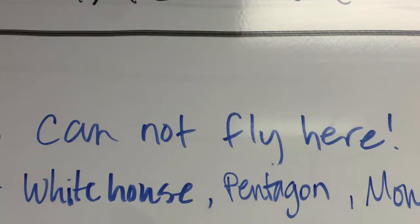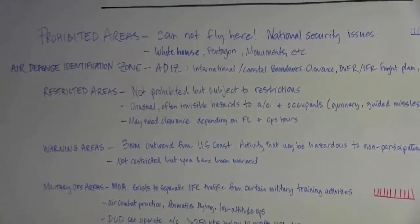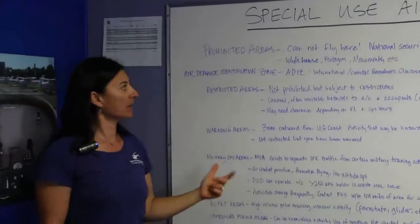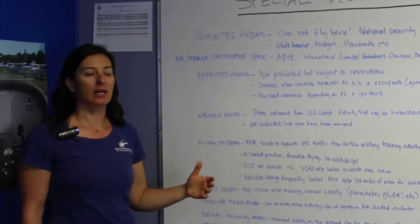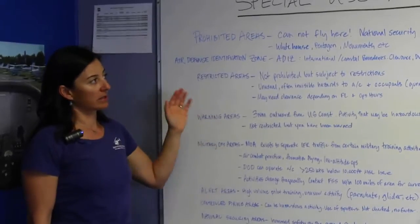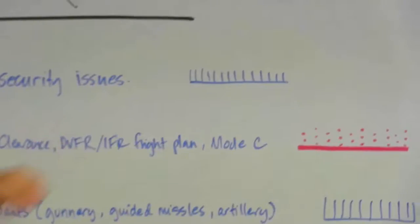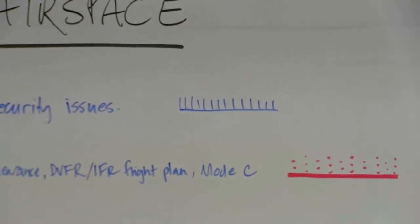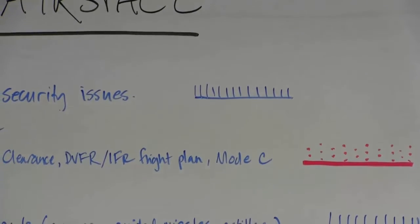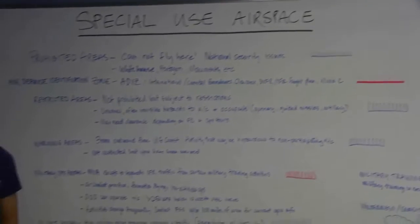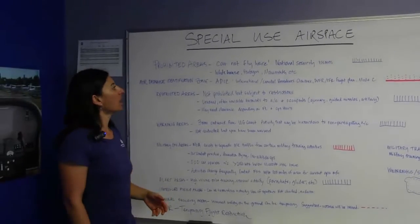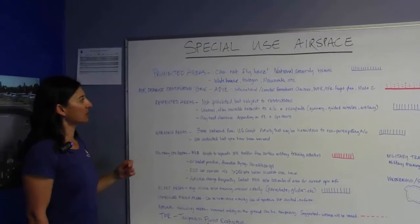If it's prohibited, it really means you are prohibited from entering that area — you can't fly there. It's a national security issue. Think about areas like the White House, the Pentagon, monuments, places like that. It will be depicted on a sectional with the blue hatched line. We don't have a sectional here with that, but if you looked at one that included the Washington, D.C. area, you would definitely see it. Pay attention to those — you'll be in a lot of trouble if you bust one of those airspaces.